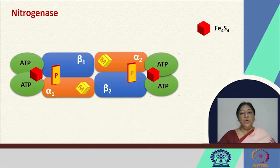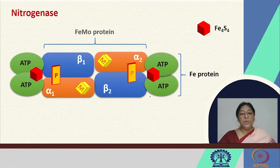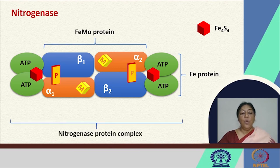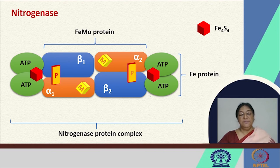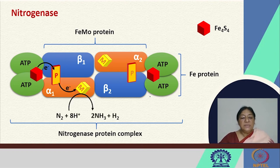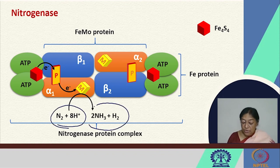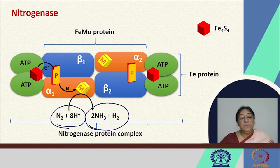In the overall nitrogenase complex, electrons from the Fe protein go to the MoFe protein at the P clusters, followed by electron transfer. These cofactors act as sites for nitrogen fixation, with nitrogen binding occurring in the central cavity of the cofactor. The Fe protein and the FeMo protein together make up the whole nitrogenase protein complex, an important complex involved in the conversion of N2 to NH3.